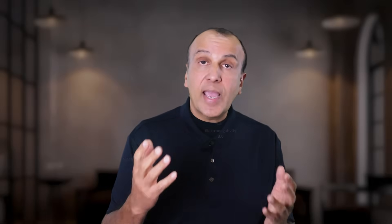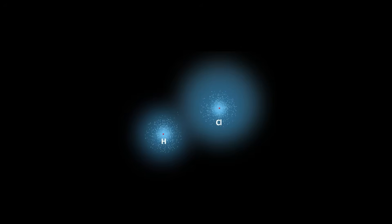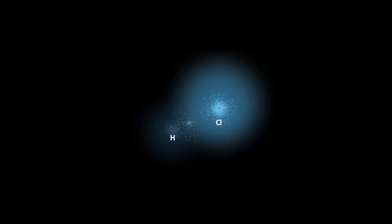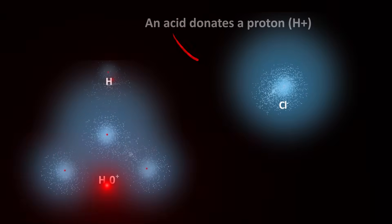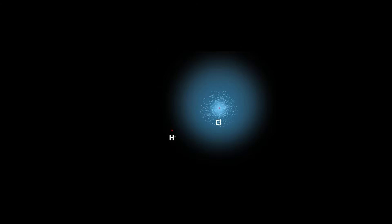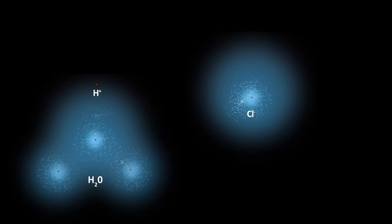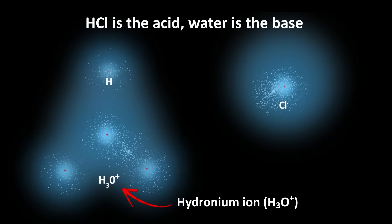How does this connect to acids and bases? When the electronegativity difference in a molecule is extreme — for example in hydrochloric acid — the chlorine, being highly electronegative, effectively strips the hydrogen atom from its lone electron. When dissolved in water, what we get is a bunch of protons, which are just hydrogen atoms stripped of their electrons, and chloride ions. An acid is a substance that donates a proton, H+, and a base is a substance that accepts it. So HCl dissolved in water is an acid because it donates a proton to a water molecule, forming hydronium ions — water molecules with an extra proton — creating a positive charge. HCl is the acid and water is the base.